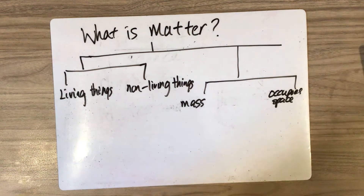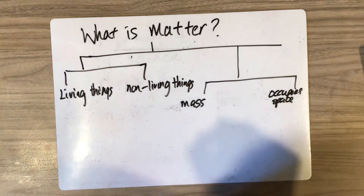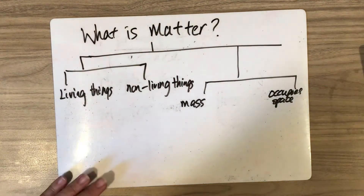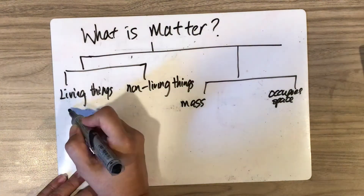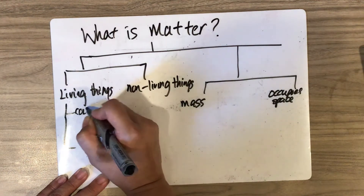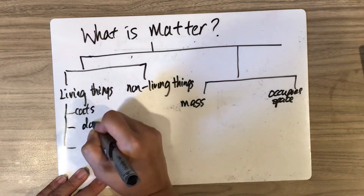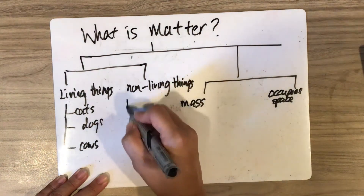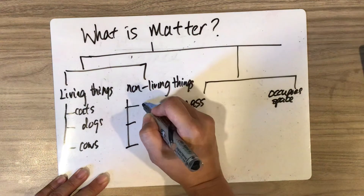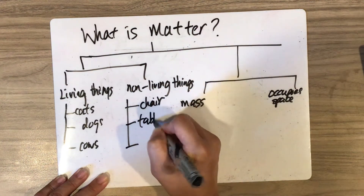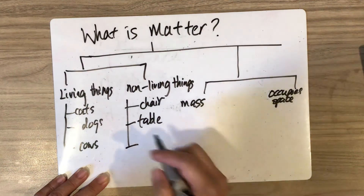Non-matter does not occupy space and does not have mass. Examples of living things: cats, dogs, cows. Examples of non-living things: chair, table, pen.